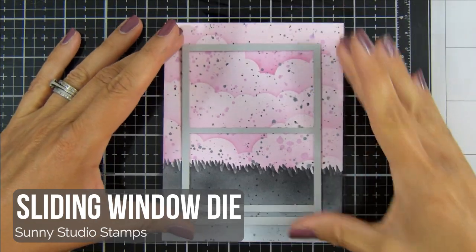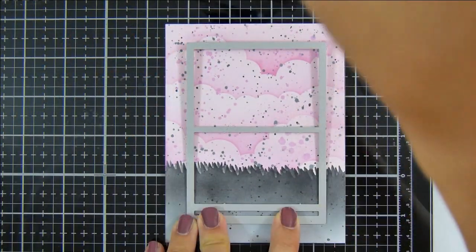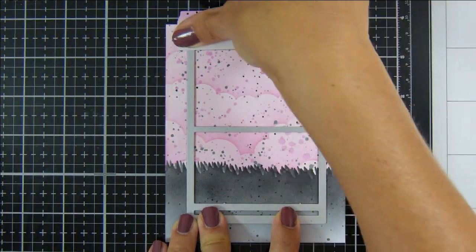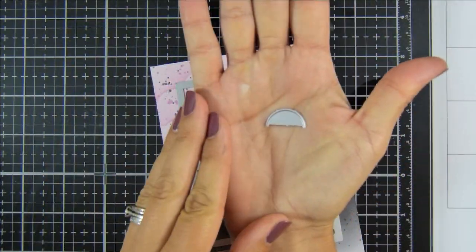I left that to dry for about 10 minutes, and then I can bring in this sliding window die by Sunny Studio Stamps, centered that up, and run it through my die-cut machine.